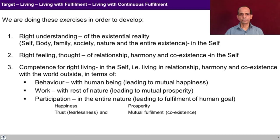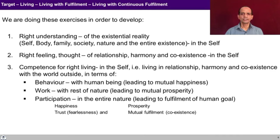When it comes to competence or right living, that competence has to be earned in the self — which means we are able to ensure our living in relationship, in harmony, in coexistence with the world outside. In any relationship at any point of time, we need to ensure that our behavior is mutually fulfilling — I feel happy interacting with the other, and the other also feels happy interacting with me. When we talk about work, it is our interaction with the rest of nature, and we have to ensure mutual prosperity: fulfilling the needs of the body in terms of physical facilities, while also enriching, preserving, and rightly utilizing the rest of nature, so that nature is also prosperous and we are also prosperous.